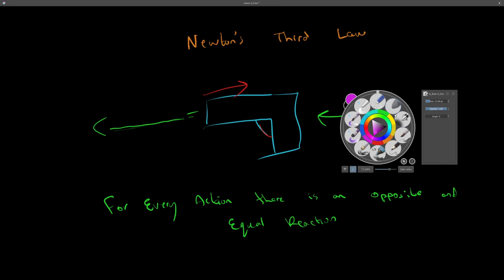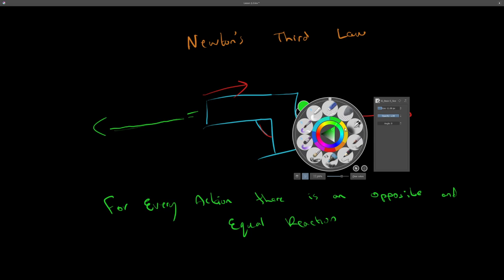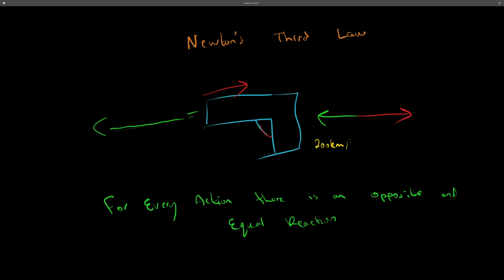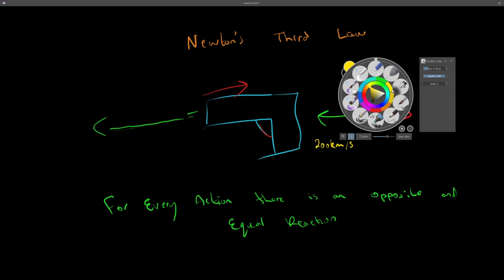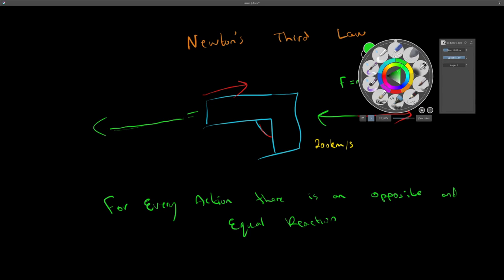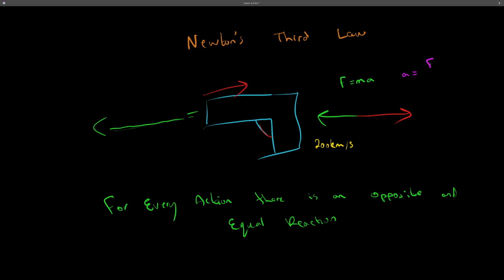But why does my hand go a lot slower and the bullet goes a lot faster? The bullet might travel at 200 kilometers per hour, while my hand only moves two to three centimeters backwards. If you understood Newton's Second Law, force equals mass times acceleration, so acceleration equals force over mass. When mass increases, acceleration decreases. My mass is a lot greater than the mass of the bullet, so by increasing the mass, the acceleration decreases — which is why I go slower and the bullet goes faster.